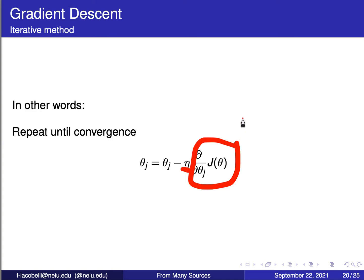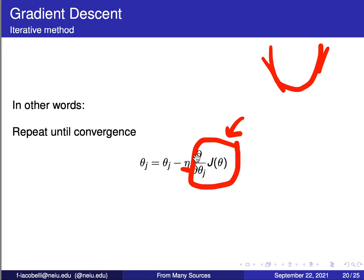Without the learning rate, you might subtract so much that you overshoot the minimum and end up on the other side of the curve, passing the minimum. To move little by little, eta is set to something like 0.01 — something really small to make the update value small. So: update theta zero and theta one to their previous values minus the learning rate times the derivative of the cost with respect to that theta.